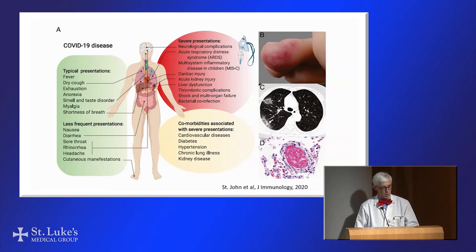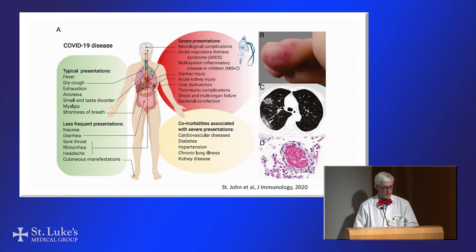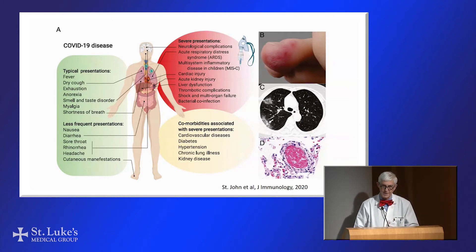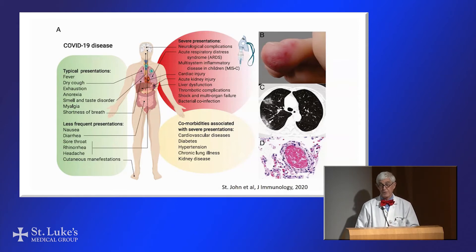However, other groups of people do become seriously and even critically ill, and we know there are comorbid risk factors for that. Those include cardiovascular disease, high blood pressure, bad heart disease, diabetes, chronic lung illnesses such as emphysema and pulmonary fibrosis, kidney disease or being on dialysis, and being over the age of 65. Any of these comorbid situations increases the risk of developing severe disease as a result of the immune system going into overdrive.